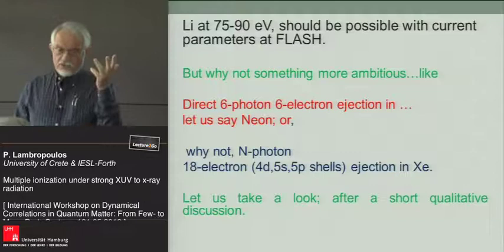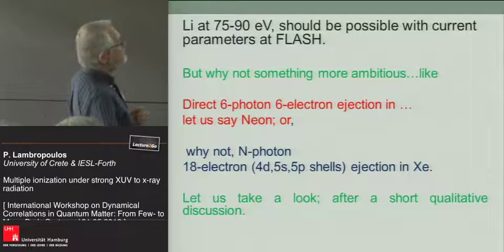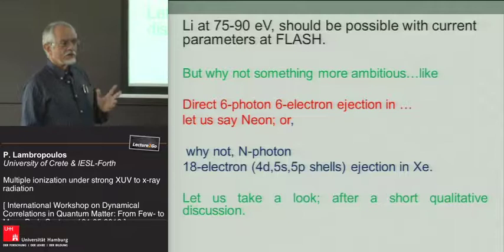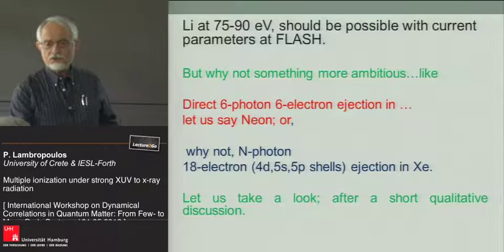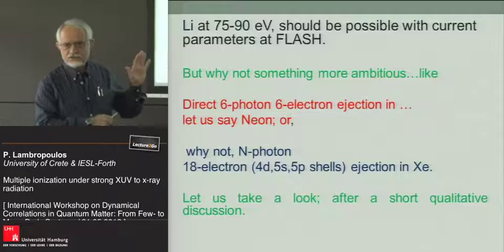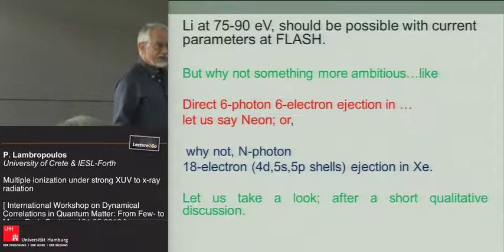In this energy range, we should be able to get three-photon triple ionization of lithium plus all the sequential processes. Why not something more ambitious, like six-photon, six-electron ejection in neon? If you have 90 eV photons — and people do have them — and now you can take the periodic table and go down, but 18 electrons from xenon. Let's discuss neon a little bit because it's not as much science fiction as you might think.